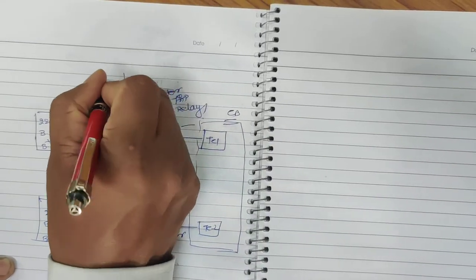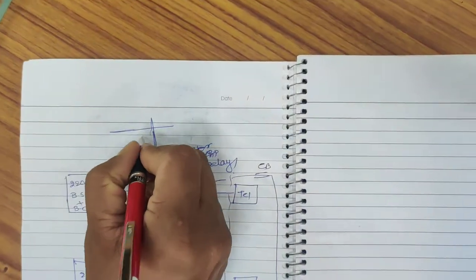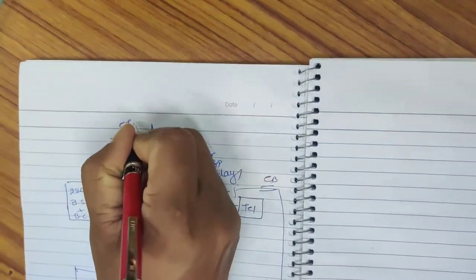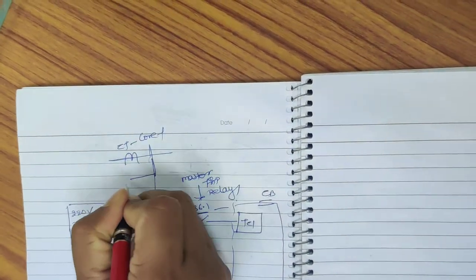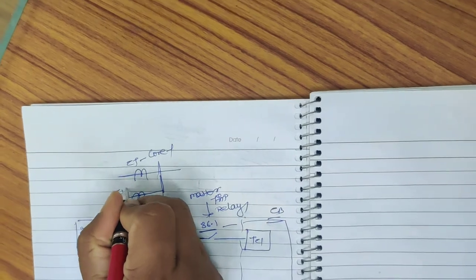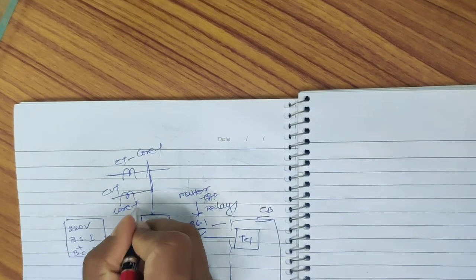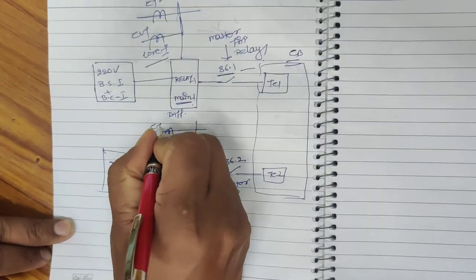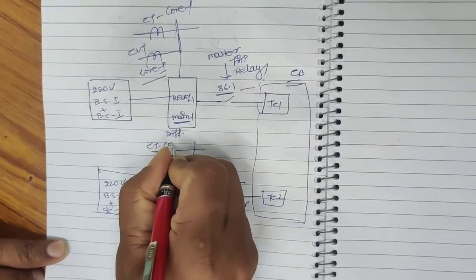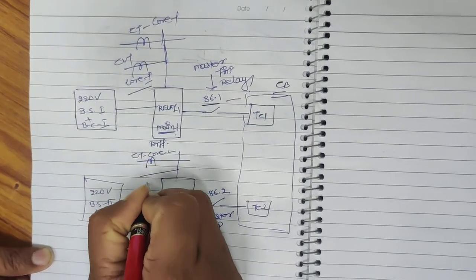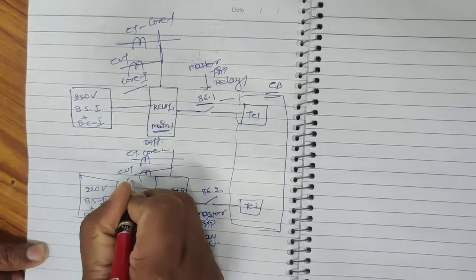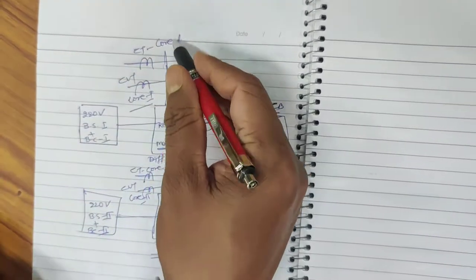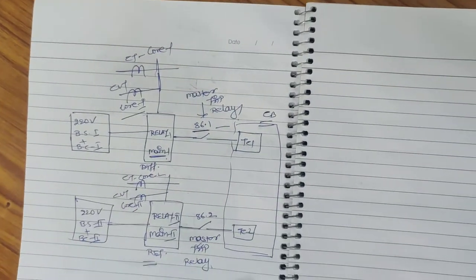Relay 1 receives its input from CT Core 1 and CVT Core 1, if it is for line protection. Similarly, Relay 2 receives input from CT Core 2 and CVT Core 2 for transmission line protection. For ICT and reactor protection, we will have CT inputs from two different cores, but CVT may not be required.